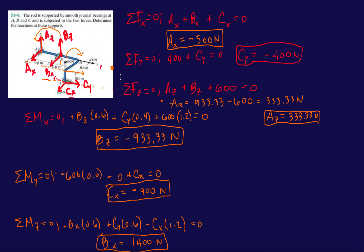So to summarize: step one was draw the reaction forces; step two, sum forces in X, Y, and Z; step three, take moments about the X, Y, and Z axes — giving you six equations to find all the unknowns. Thanks for bearing with me — this was my first video with the Wacom tablet. Alright guys, take it easy, I'll see you in the next video.